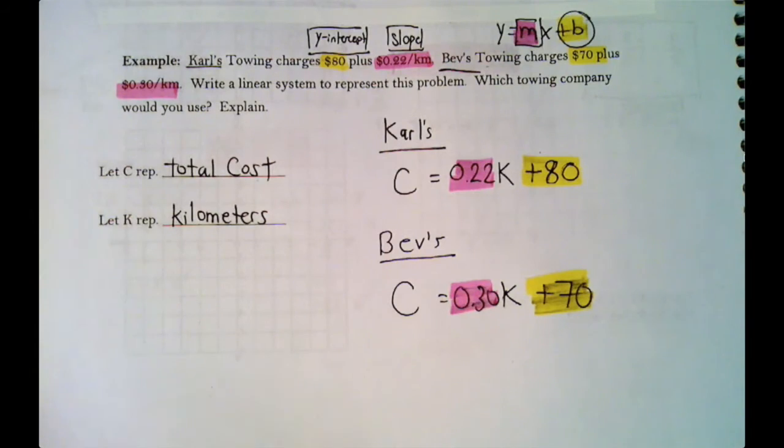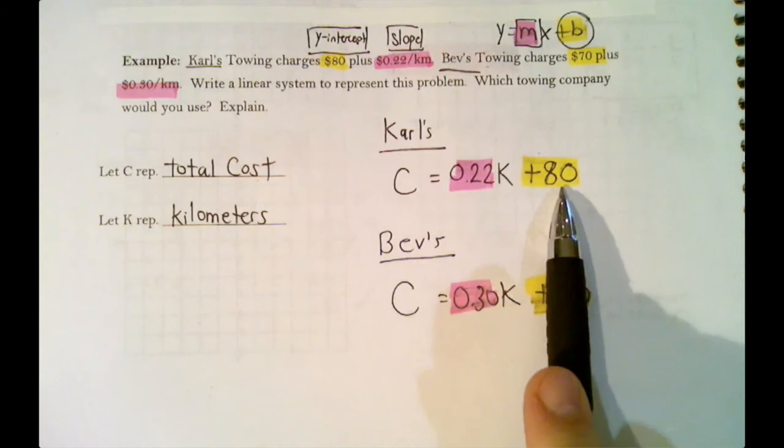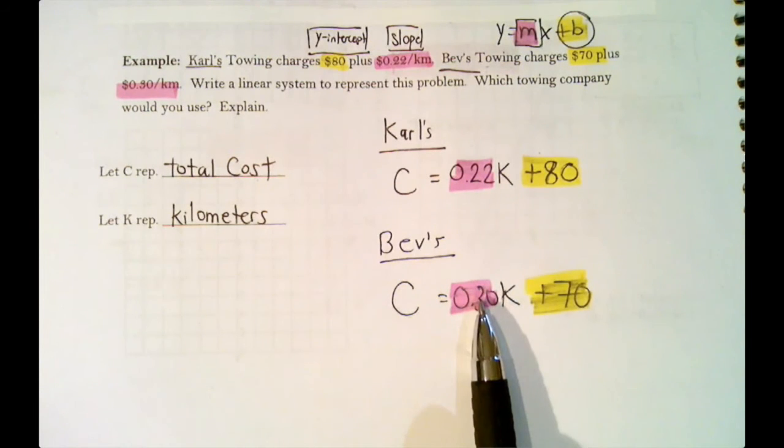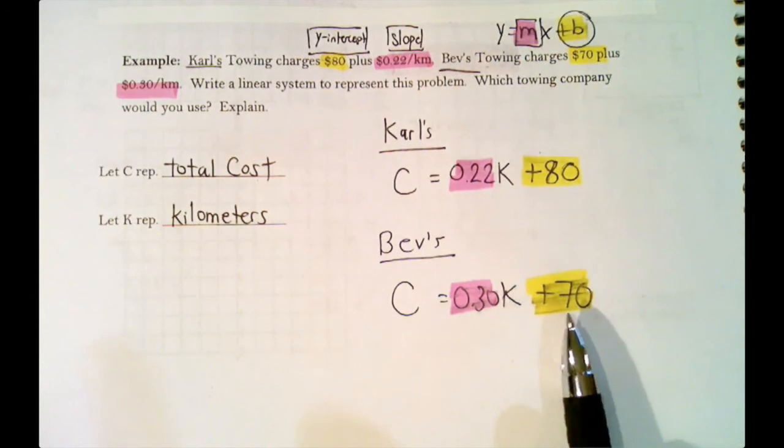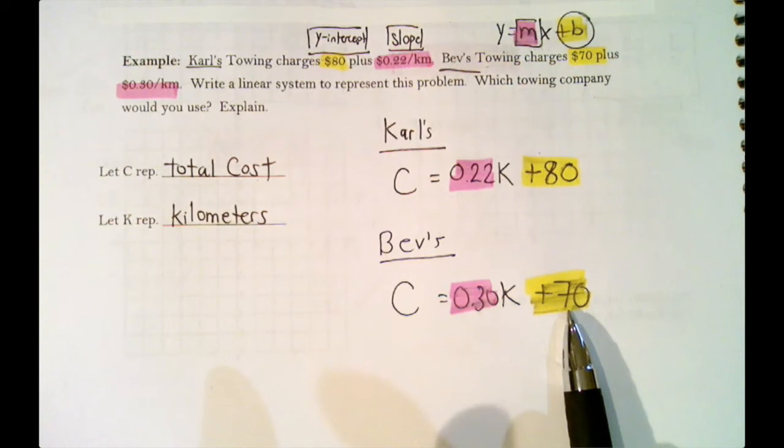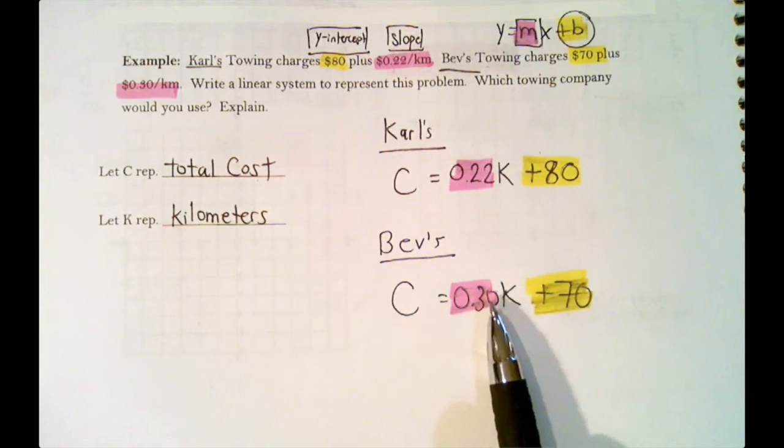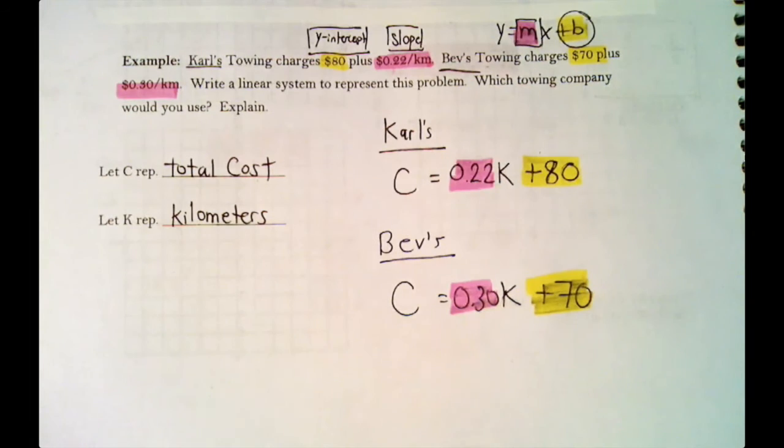Carl's towing and Bev's towing. Now it says which towing company would you use? Well, if we were to graph these, we could really figure out which company we're going to use. But at this point, we can really only answer the question by looking at starting costs. Carl's costs more but then doesn't go up as fast as Bev's. So we're probably going to use Bev's company because she's the cheapest at the beginning. And then at some point, she's probably going to become more expensive because she charges more per kilometer.